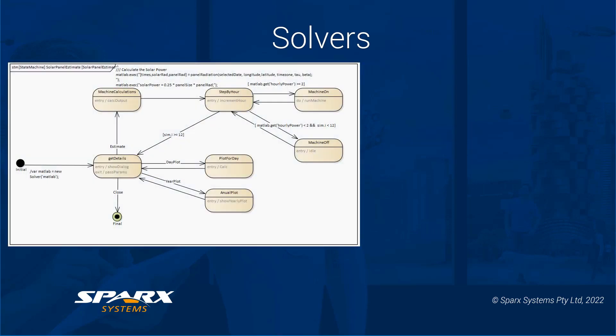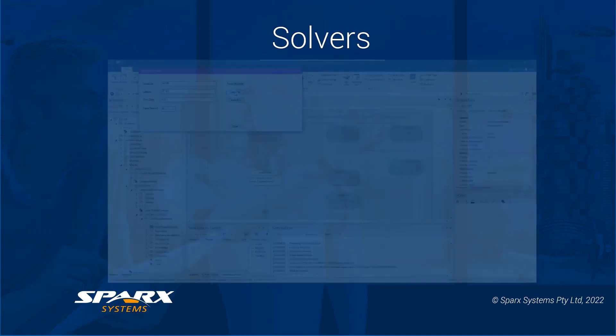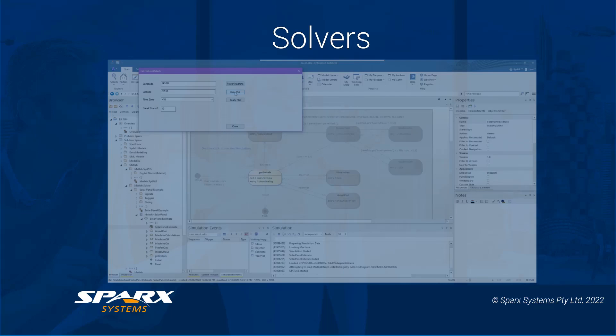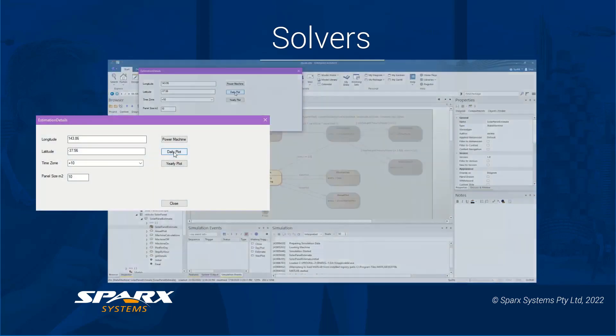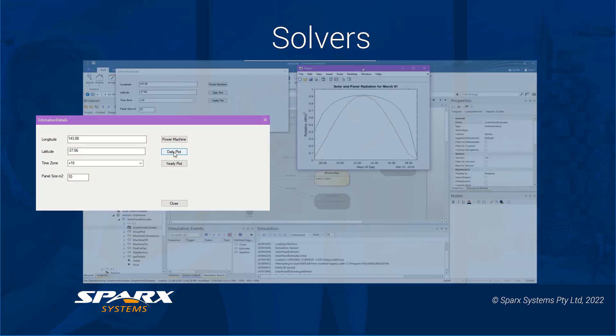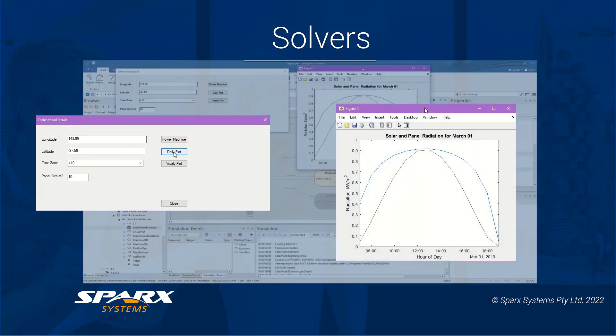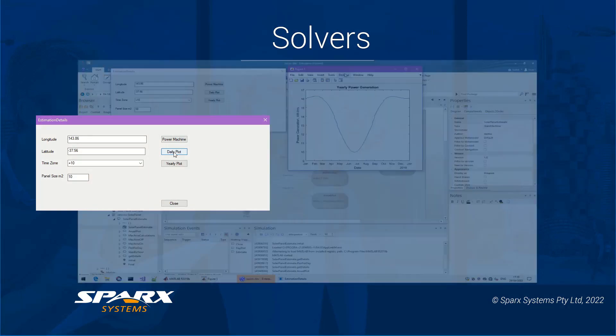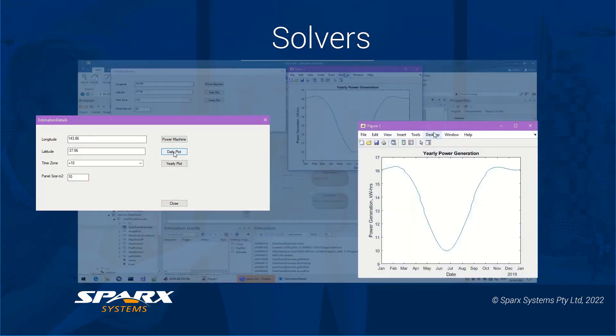For example, here is a state machine using MATLAB to simulate the power output of a solar array based on the geolocation, the time of year and the solar panel array size. All these variables are able to be user-defined in a Win32 dialog that prompts for direct user input to the simulation.